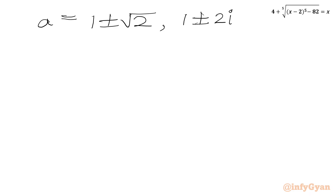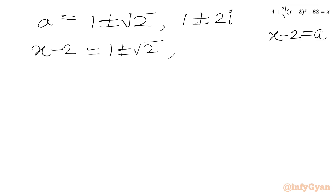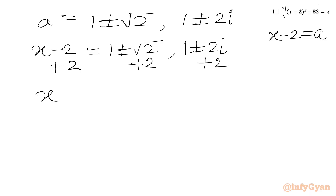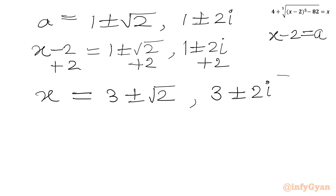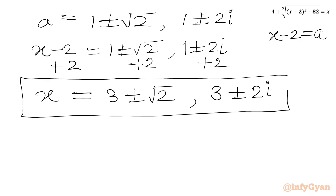Now recalling that A was our substitution for x minus 2, we write x minus 2 equal to 1 plus or minus square root 2 and 1 plus or minus 2i. Adding 2 to both sides, we get x equals 3 plus or minus square root 2 as the real solutions, and x equals 3 plus or minus 2i as the complex solutions.